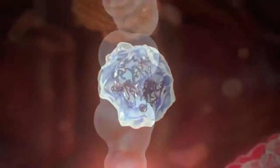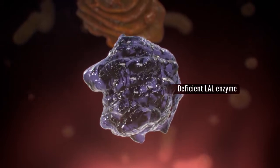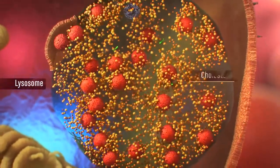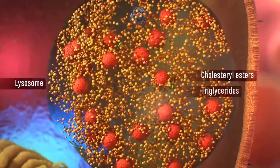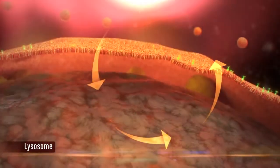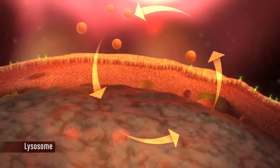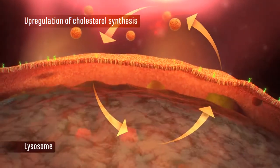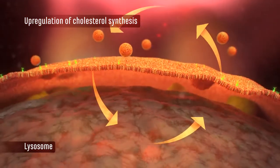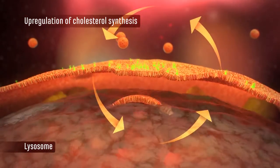Mutations of the LIPA gene lead to a deficient LAL enzyme. Deficient LAL enzyme activity results in the ongoing accumulation of cholesterol esters and triglycerides, causing lysosomal engorgement within the cell. Additionally, the limited release of free cholesterol and free fatty acids causes upregulated cholesterol synthesis, which further exacerbates the cellular uptake of cholesterol esters and triglycerides, leading to even more lysosomal engorgement.